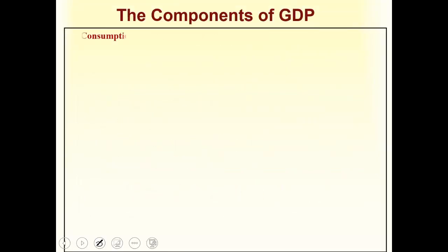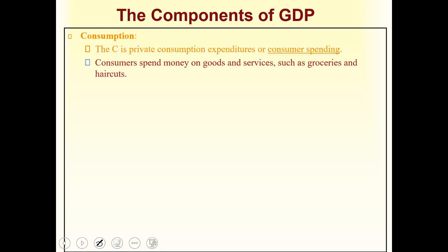The first component is consumption. C represents private consumption expenditure, or consumer spending — the spending done by consumers. In every country there are many consumers who purchase things in the market. Consumers spend money on goods and services such as groceries and haircuts. This is a major component of GDP. If you purchase anything for your survival — food, clothes, haircuts, body spray — that is consumption included in GDP.